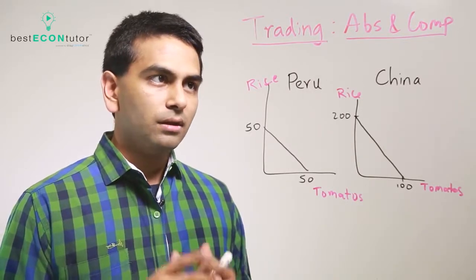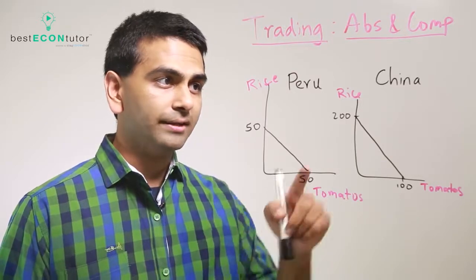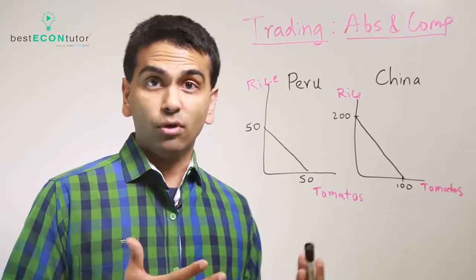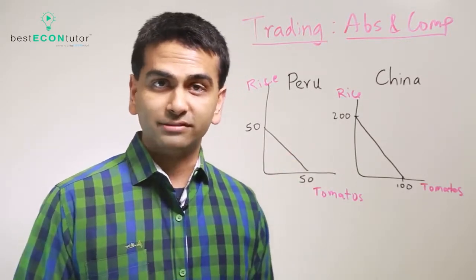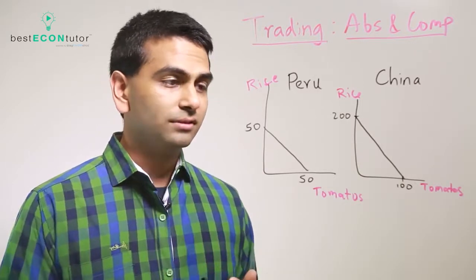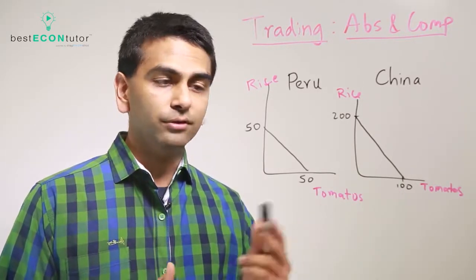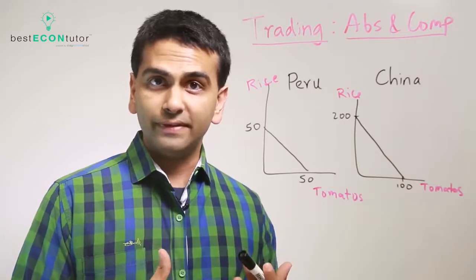So here Peru can make 50 units of rice and China can make 200 units of rice. Simply because China can make more, they have the absolute advantage for rice. Now for tomatoes, same thing: China can make a hundred tomatoes and Peru can make 50 tomatoes. So China has the absolute advantage again.